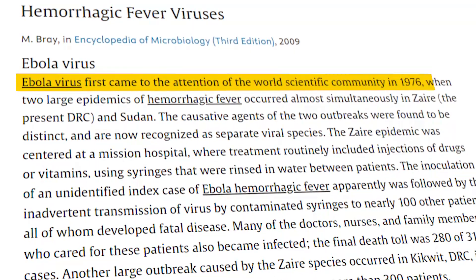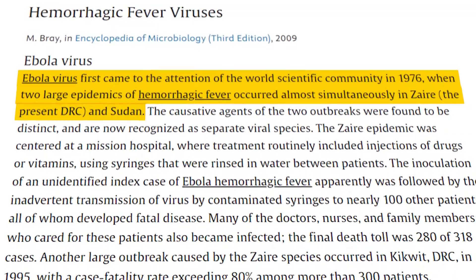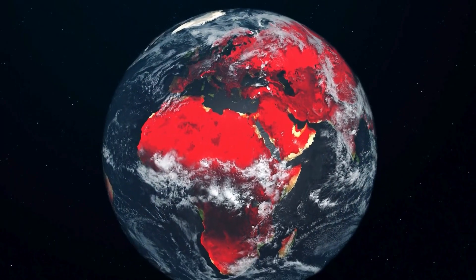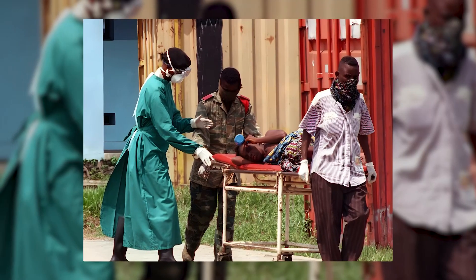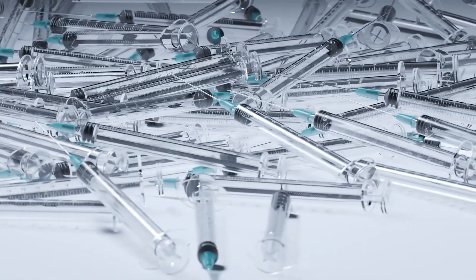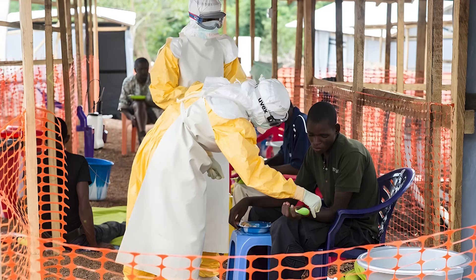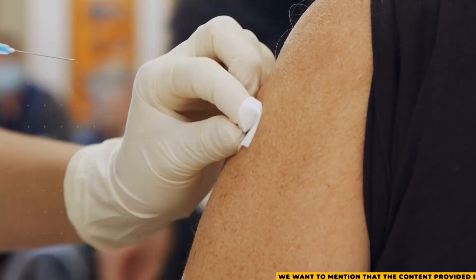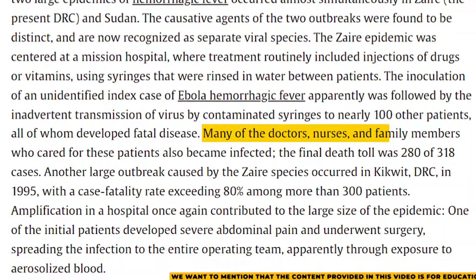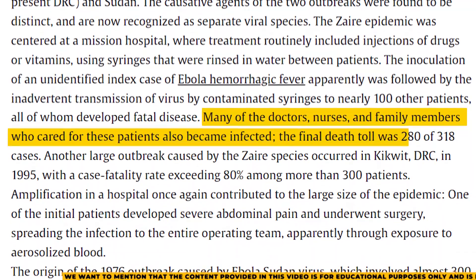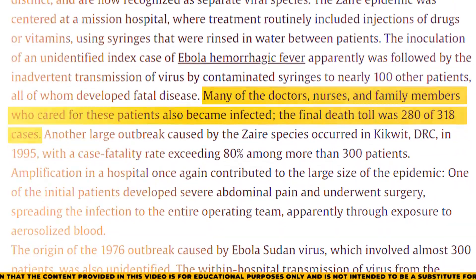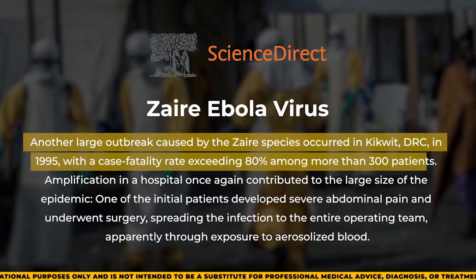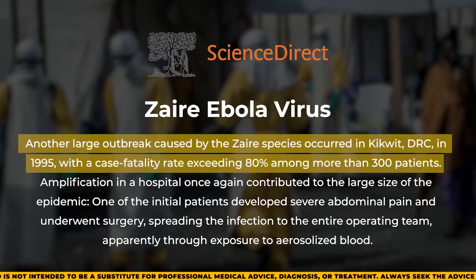Ebola virus first gained attention in 1976, when two large outbreaks of hemorrhagic fever occurred almost at the same time in Zaire and Sudan. The viruses responsible were different, now known as separate species. The Zaire outbreak happened in a mission hospital where syringes were reused between patients, causing the virus to spread. Nearly 100 other patients were infected through these contaminated syringes, all of whom died. Many healthcare workers and family members also became infected, resulting in 280 deaths out of 318 cases. A similar large outbreak occurred in Kikwit, DRC, in 1995, where more than 300 people were infected and over 80% died.